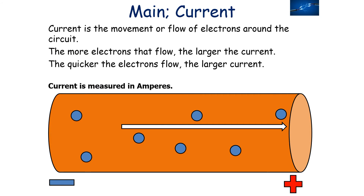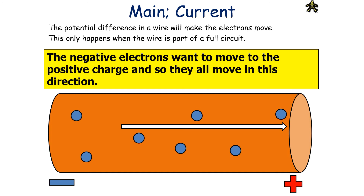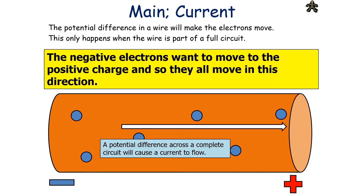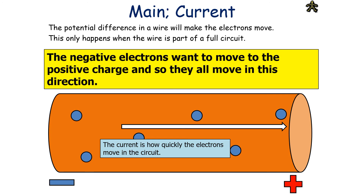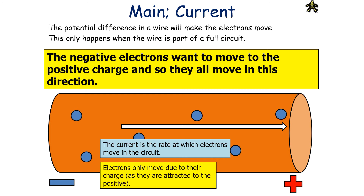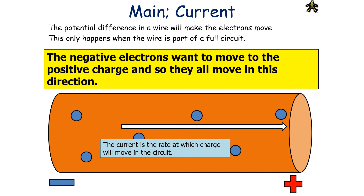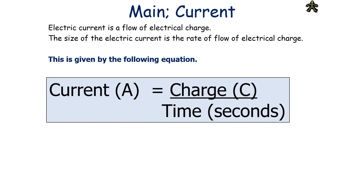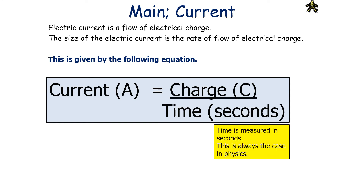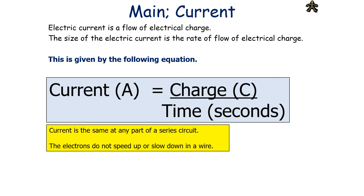Current is the movement or flow of electrons around the circuit. The more the electrons flow and the quicker they flow, the larger the current. We measure this current in amps or amperes. A potential difference across a complete circuit will cause a current to flow, causing electrons to flow in the same direction. The current measures the rate at which the electrons move in the circuit. As current is the rate at which charge moves in the circuit, we can give the equation: current in amps equals charge in Coulombs divided by time in seconds. Current is measured in amps, charge in Coulombs, and time in seconds. Current is the same at any part of a series circuit — the electrons do not speed up or slow down in a wire.